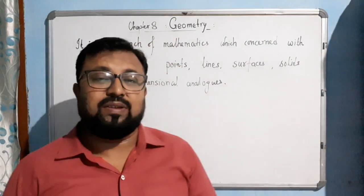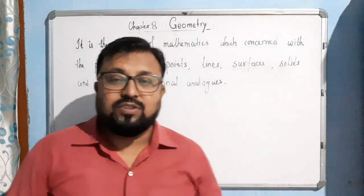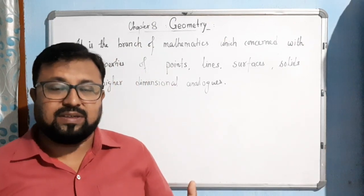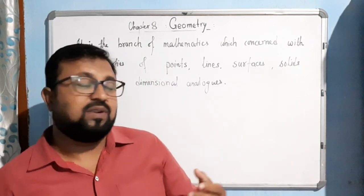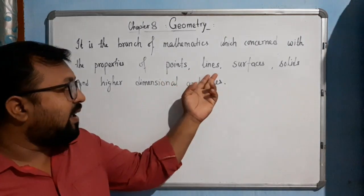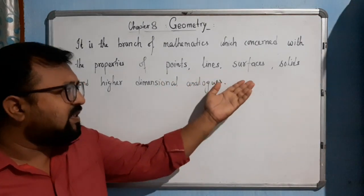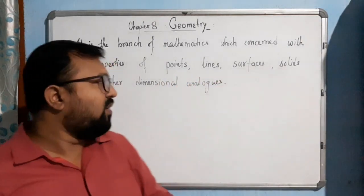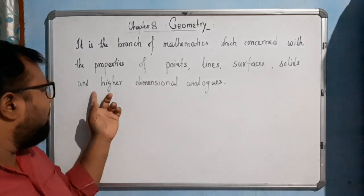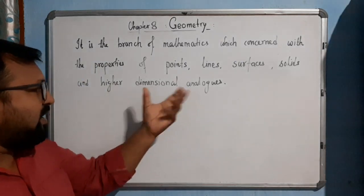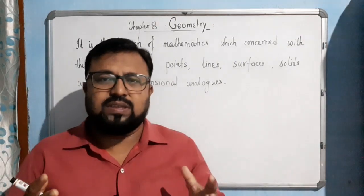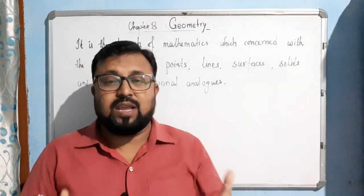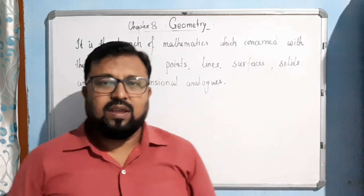What do you understand by Geometry? Geometry is the branch of mathematics which deals with the properties of points, lines, surfaces, and solids — any shape and higher dimension analogs. We can say that it deals with the properties of shape, size, and angles.